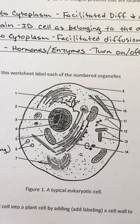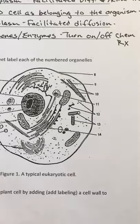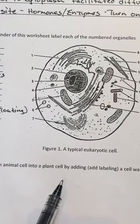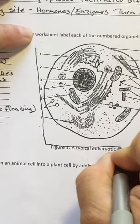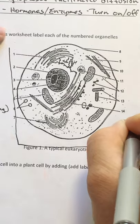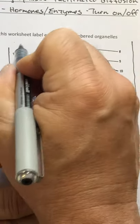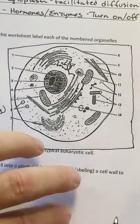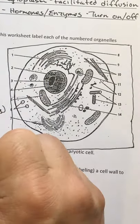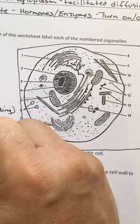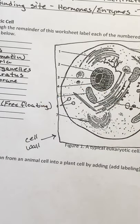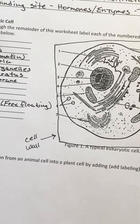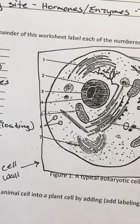The last thing on this front page basically says to convert this eukaryotic cell into a plant cell by adding and labeling a cell wall. So here is my carefully drawn illustration of a cell wall surrounding the eukaryotic cell — we'll label this the cell wall. The cell wall you would see in plant cells and fungi, but not in animal cells.